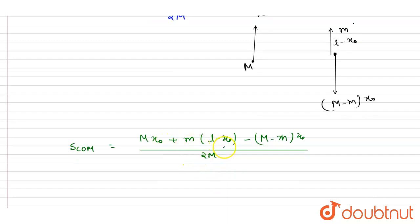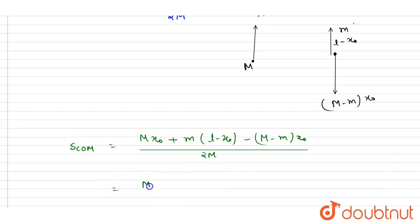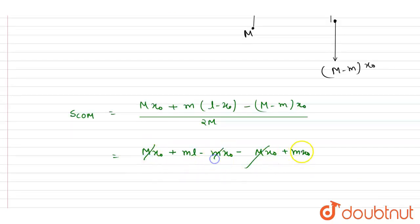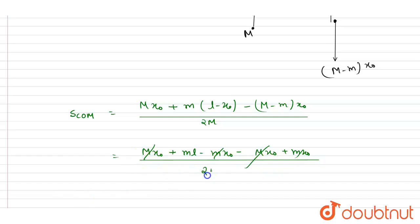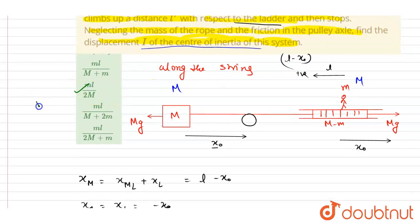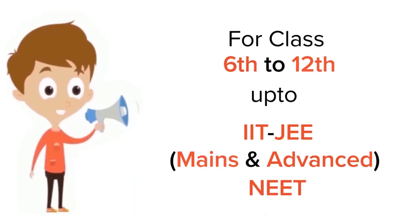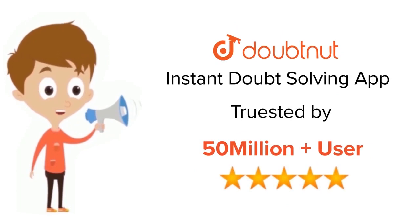Opening the expression: M·x₀ + m·(l − x₀) − M·x₀ − m·x₀ + m·x₀, all divided by 2M. The x₀ terms cancel out, leaving ml / 2M. So the displacement of the center of mass of the system is ml / 2M, which is option B. Thank you.